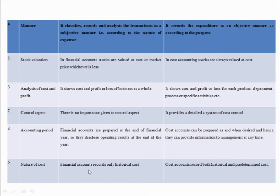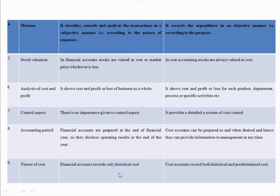Ninth difference: financial accounts record only historical cost. Historical cost means past or backdated expenditure — those expenses which have already been incurred are known as historical cost.